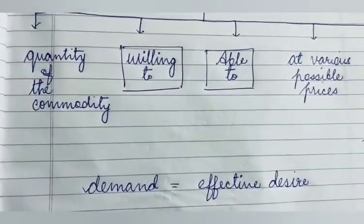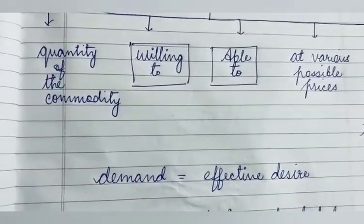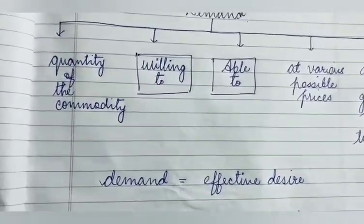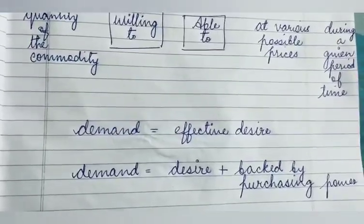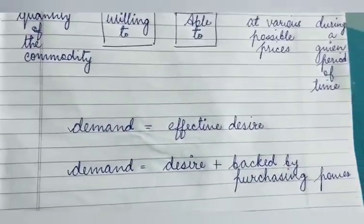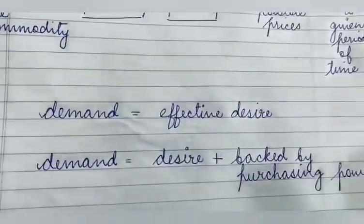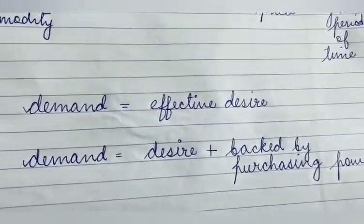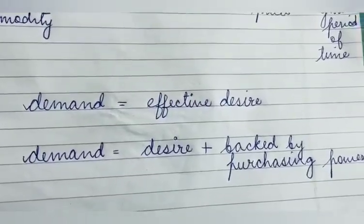Effective desire ka matlab bhi demand hota hai. Effective desire hum tab bolte hain when aapke desire ke saath saath aapke kharidne ki chhamta bhi hai. Desire ka matlab hota hai willing to — aap desire kar rahe hain means you are willing to buy that good. Jab us willing to ke saath aapki ability hai kharidne ki, then that is called demand.